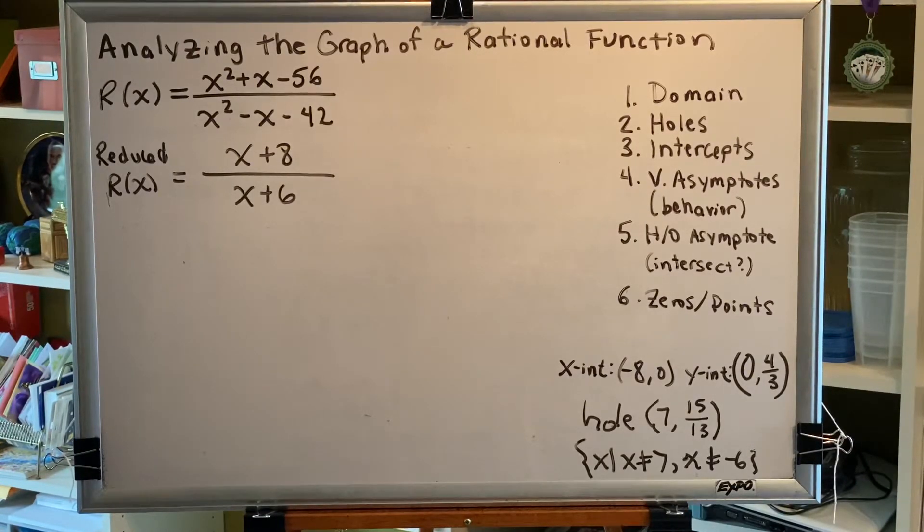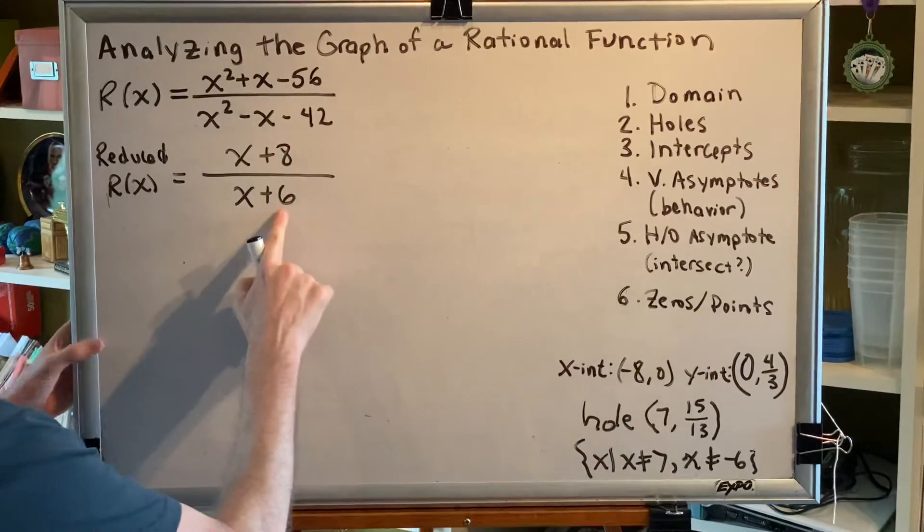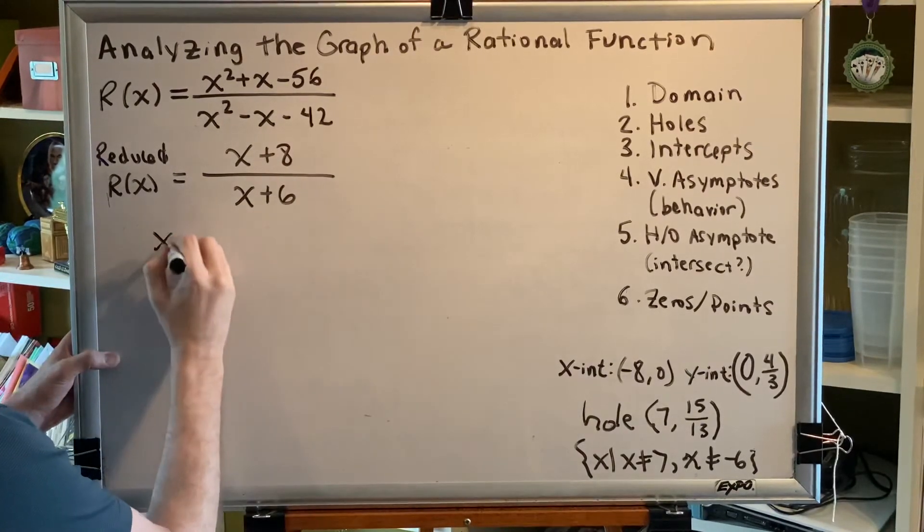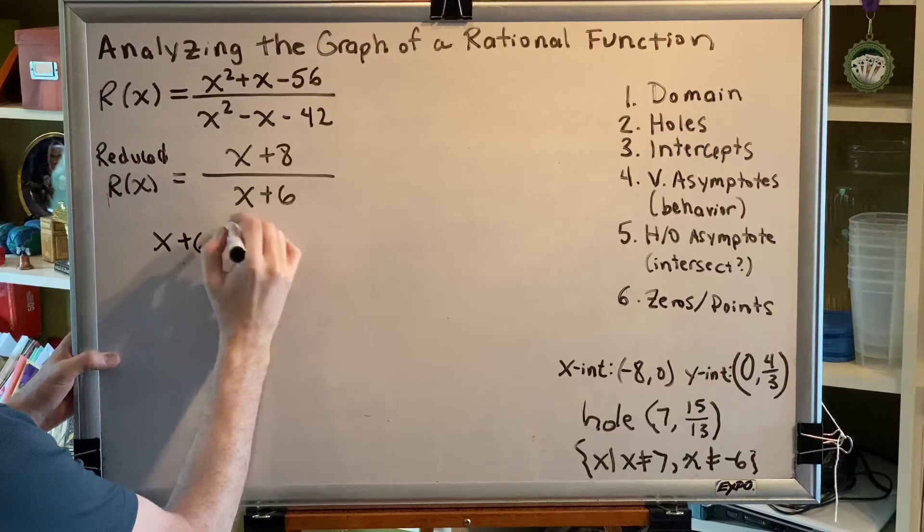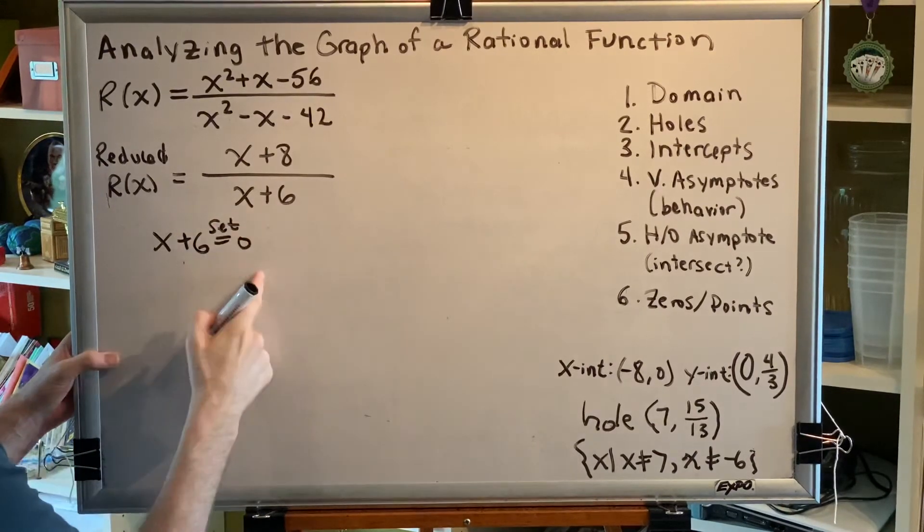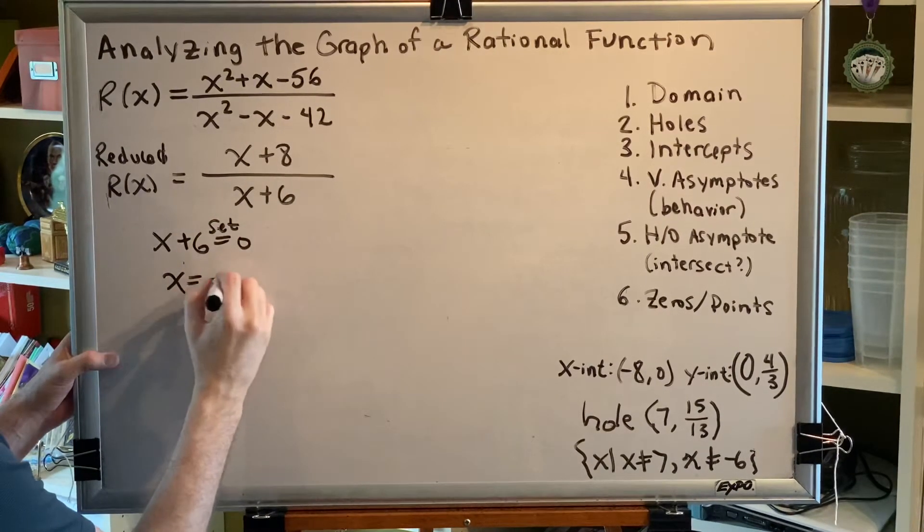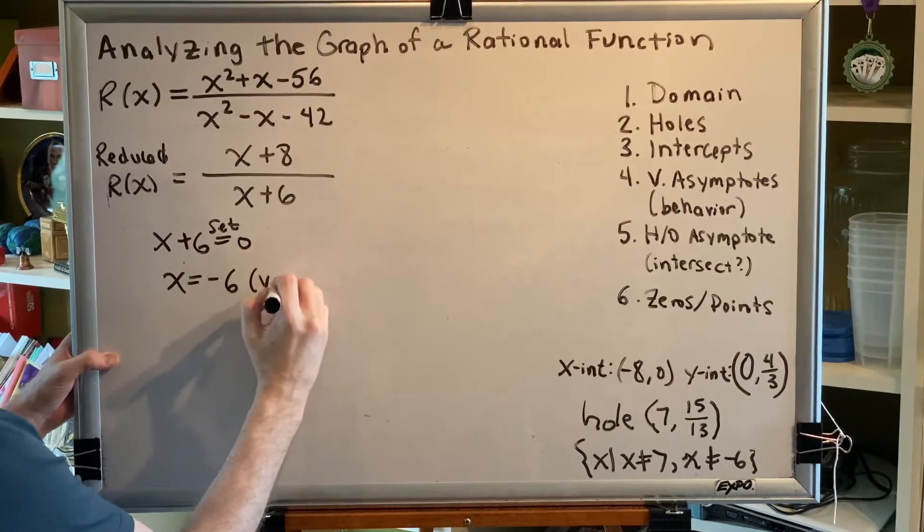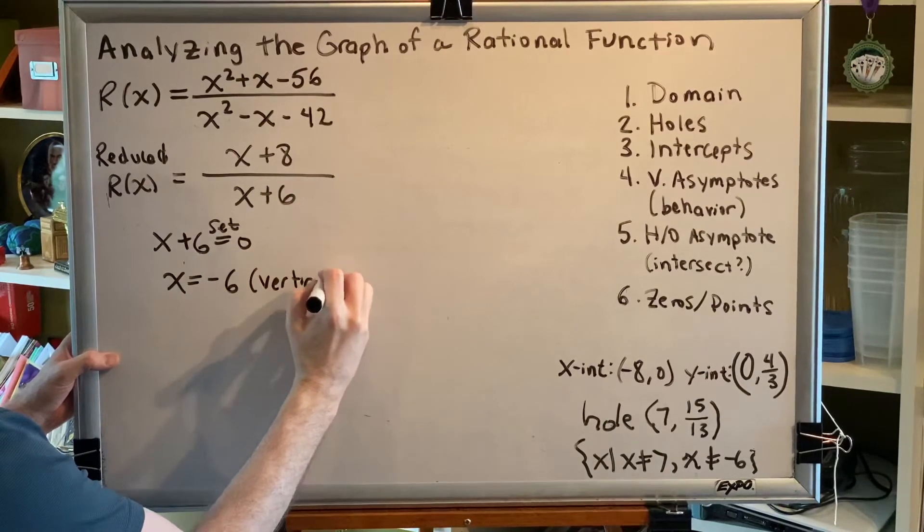We're going to set our reduced r of x equal to 0. By subtracting 6 on both sides, we get x equals negative 6. This is our vertical asymptote.